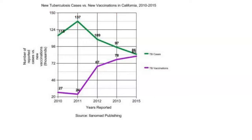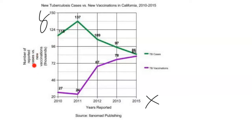We come over to the X and Y axis of this chart. The X axis gives us the year, and the Y axis gives us the number of cases — described in thousands, so when we see 124, we're talking about 124,000. There's also a legend giving us more data about the chart. We have TB cases in green, and TB vaccinations in purple.